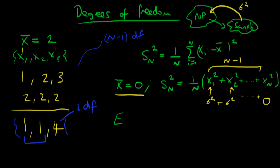So if we take the expectation of Sn squared, it turns out that it's actually equal to (n minus 1)/n times the population variance. Our sample variance actually underestimates the population variance — it's a biased estimator. We need to correct it by multiplying by n/(n minus 1), which is called the Bessel correction.